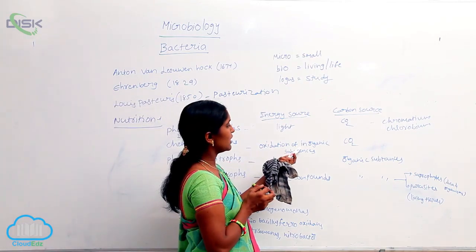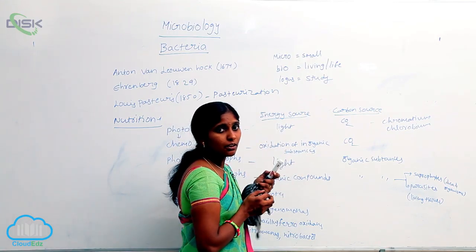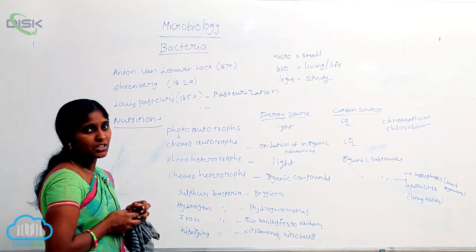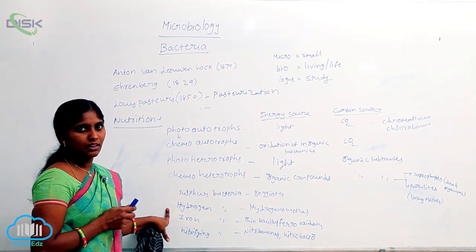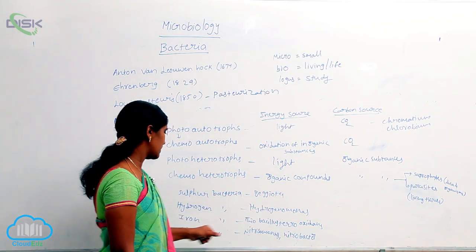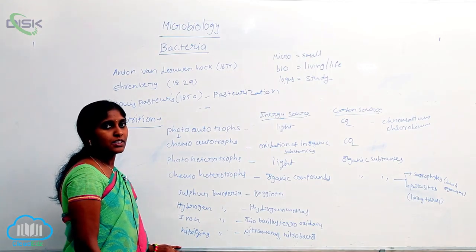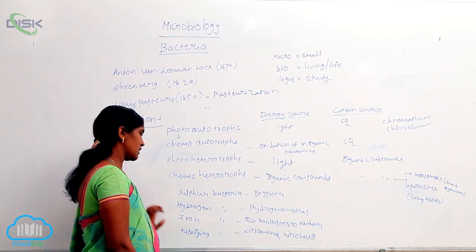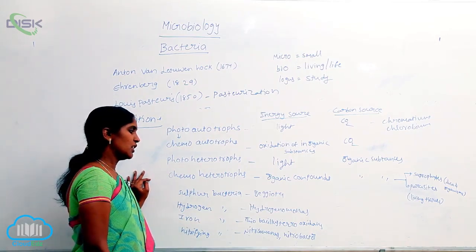Different inorganic substances are oxidized by different types of bacteria, and according to that they are further classified. Sulfur bacteria oxidize sulfur to obtain energy — example is Beggiatoa. Next, hydrogen bacteria oxidize hydrogen — example is Hydrogenomonas. Iron bacteria are involved in the oxidation of iron, where ferrous ions are converted into ferric ions — example is Thiobacillus ferrooxidans.